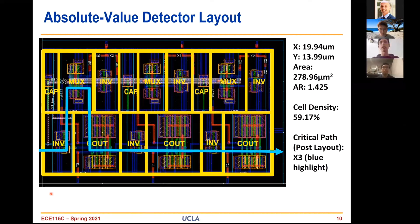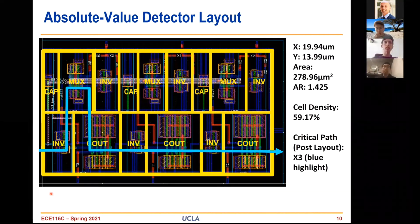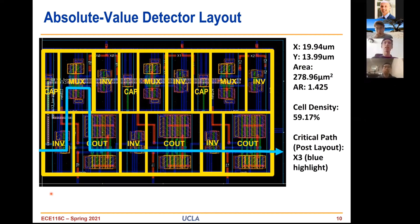Looking at our layout, we have a row of MUXes and inverters along the top, and our inverter carry-out chain along the bottom. We used shared VDD and ground rails to make everything nice and symmetrical, and used stacked transistors to squeeze everything in. Our PR boundaries aren't butted up next to each other because we had to keep N-wells far enough apart, but that left us room for routing. We had an area of 278.96 microns squared, an aspect ratio just under the requirement at 1.4, and a cell density of about 60%. The critical path X3 goes from the bottom-left inverter through the MUX and then back through the carry-out logic.